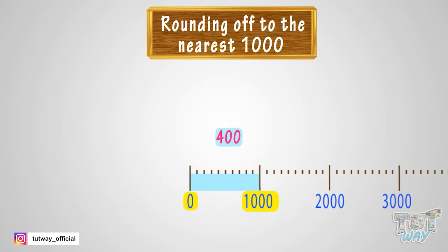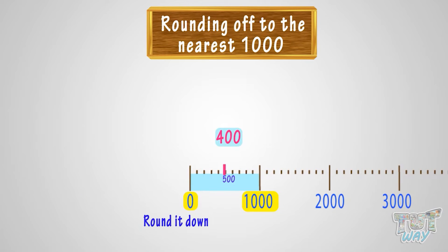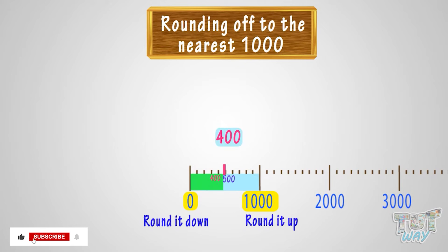Now we know there are always two options. Either we can round the number up or round it down, depending on whether the number is after or before the midway mark. The midway mark between 1,000 is 500. And 400 is below or before the 500 mark, so we will round it down to 0.